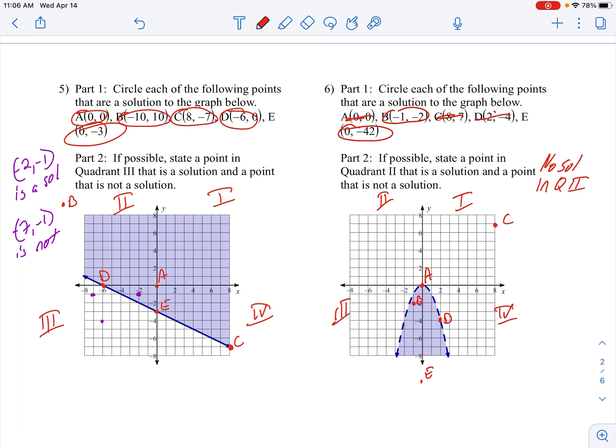There are an infinite amount of points that are not solutions. Let's just take negative 4, 4. Negative 4, 4 is not a solution because quadrant 2 does not contain any shaded parts, so we're all about no solution.